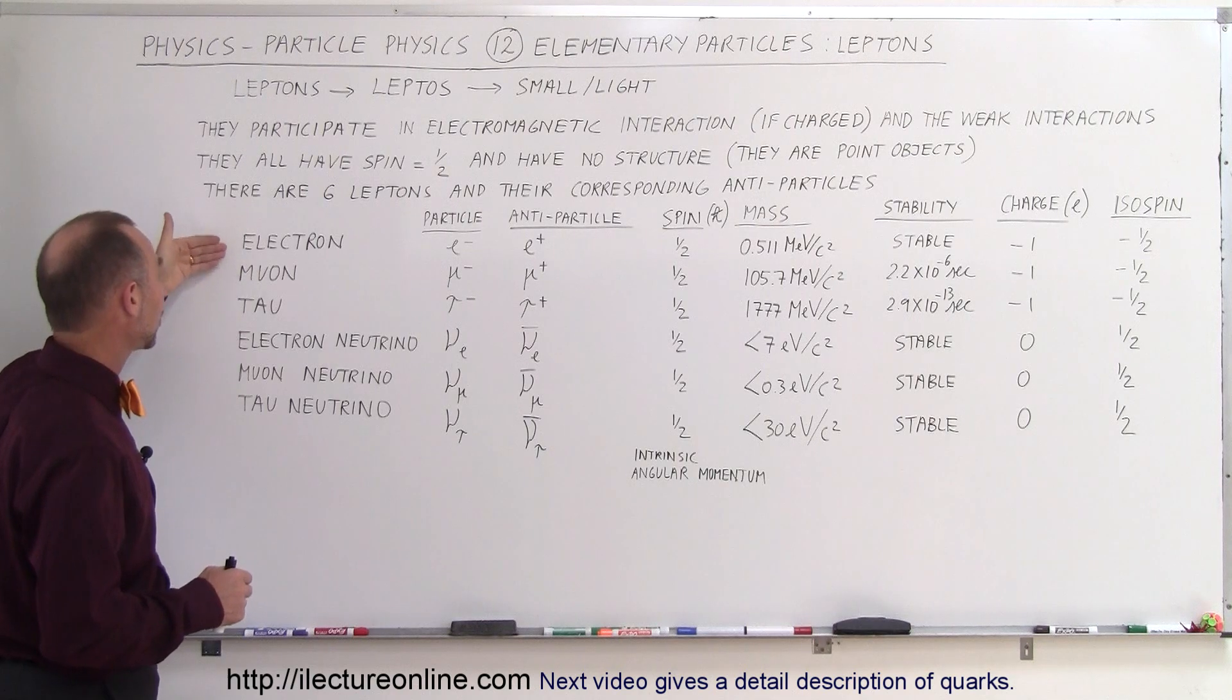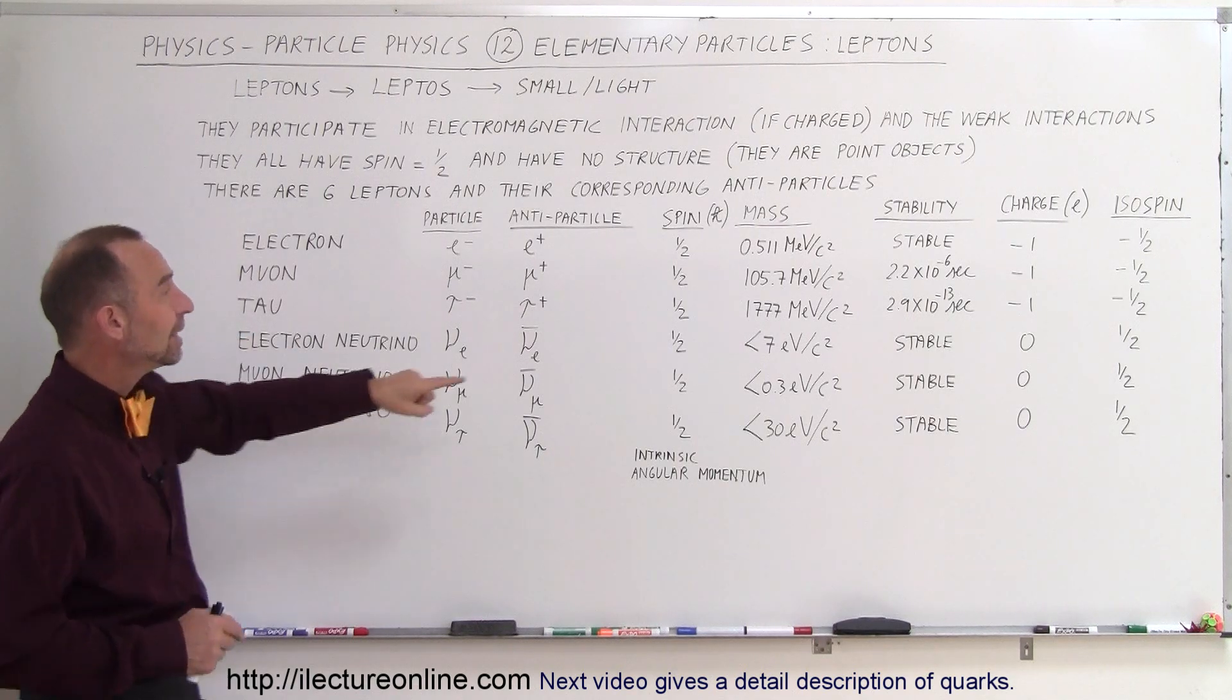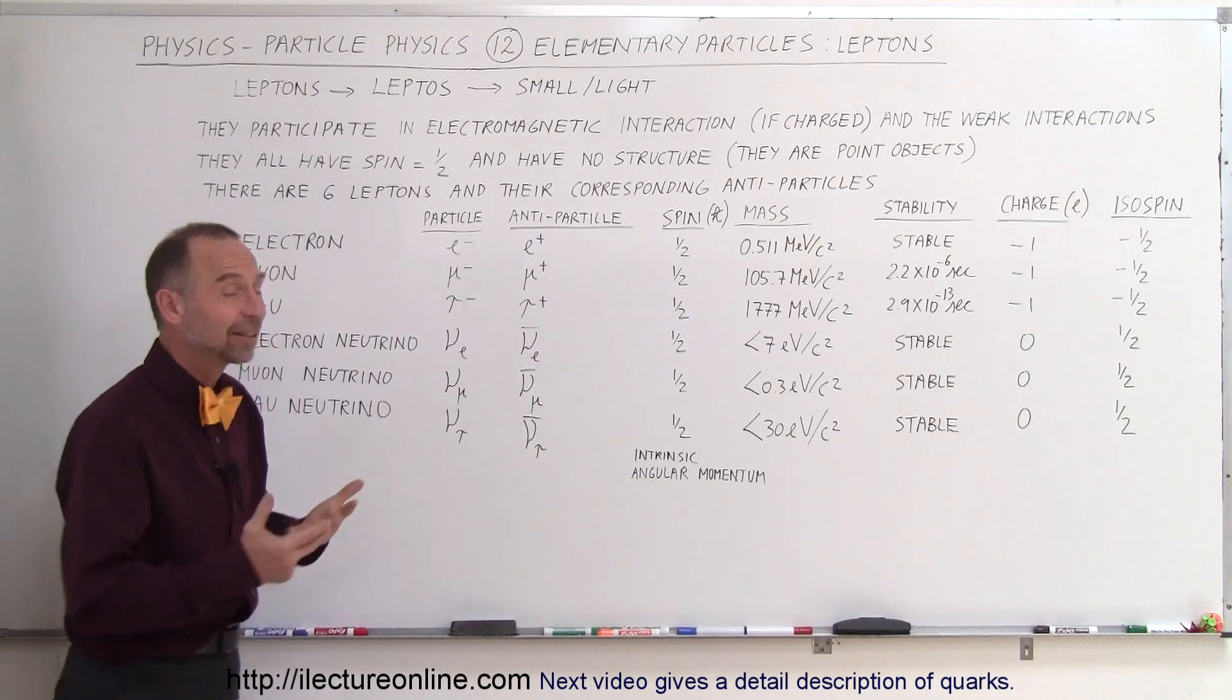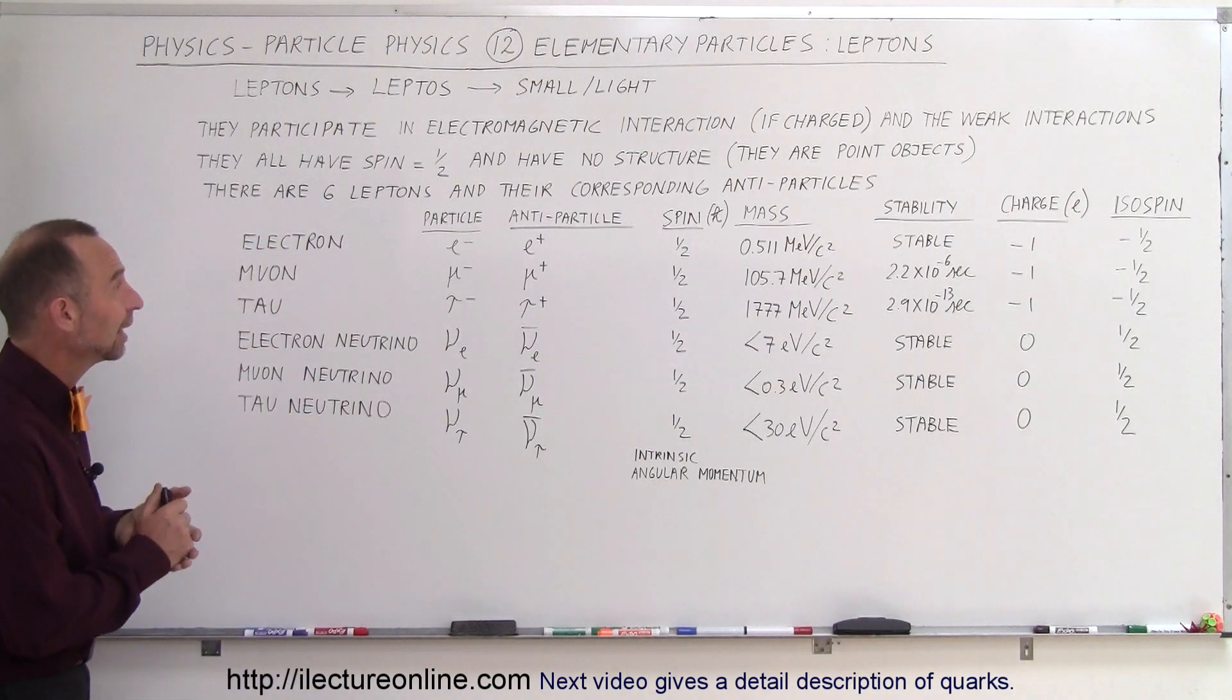But the other three particles, the electron, the muon, and the tau, they do indeed have a negative one charge, so they are affected by the electromagnetic interactions.